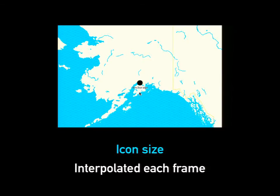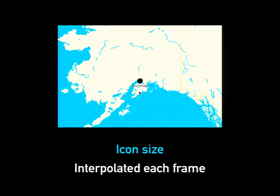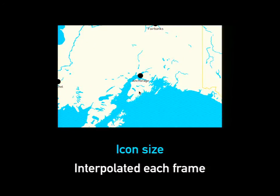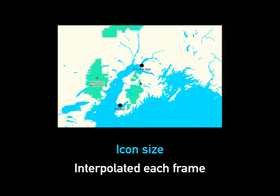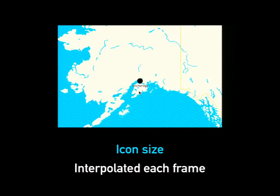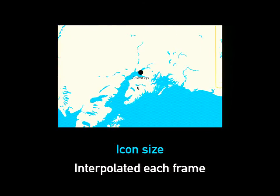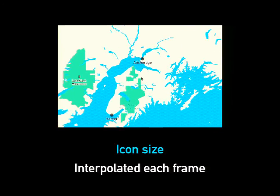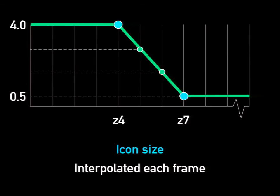Icon size — I exaggerated the size of the icon so you could see it. This is a numerical paint property, so it's dynamically changing. As this zooms in, you can see the icon shrinking seamlessly. The icon opacity and text size are also changing dynamically in that example. The graph of that property shows a linearly interpolated function — that's kind of what I just showed already.